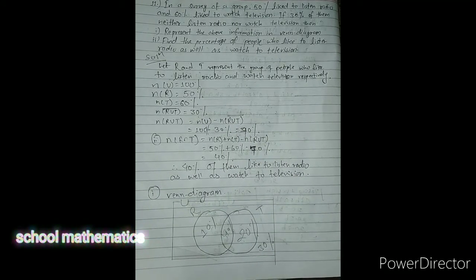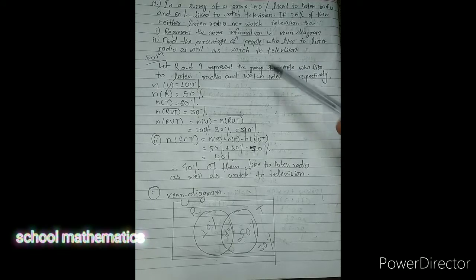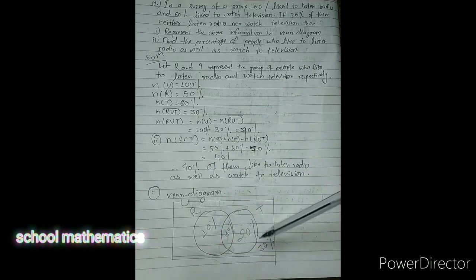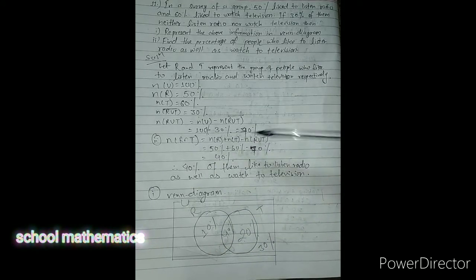We need to understand the question: identify what is given and what is to be calculated. We can solve this either by using the Venn diagram or by using the formula.